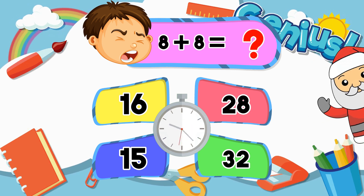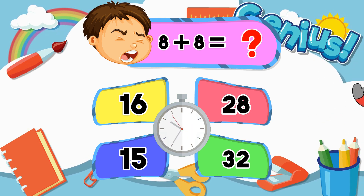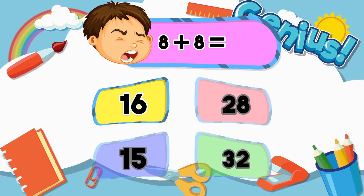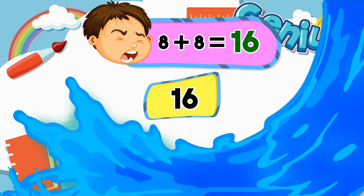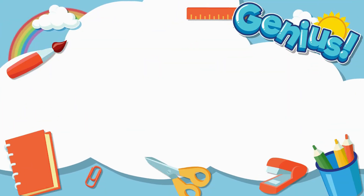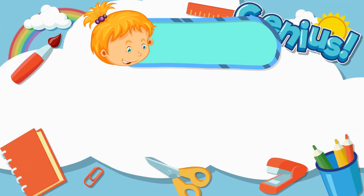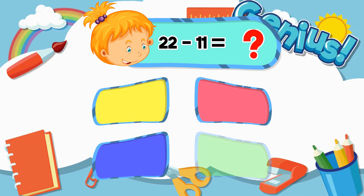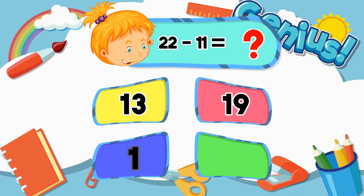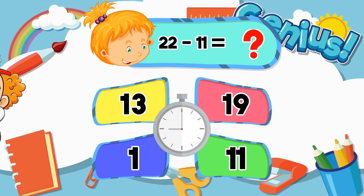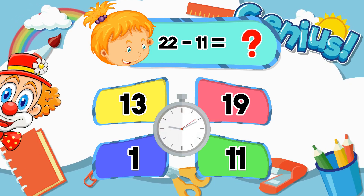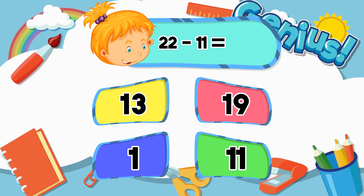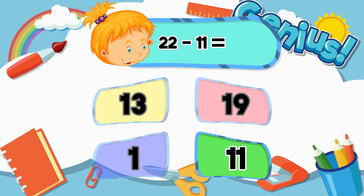What is 8 plus 8? 16, 28, 15, 32. What is 22 minus 11? 13, 19, 1, 11. 11.